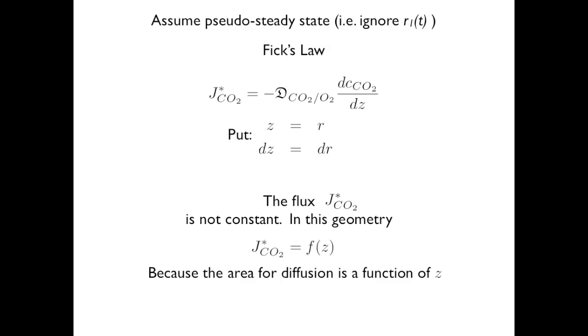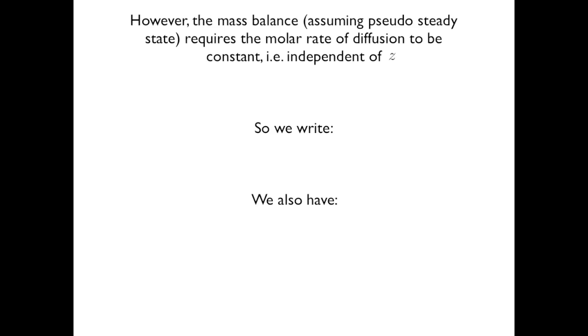In this spherical system, the flux is not constant because as r changes, the area through which CO2 diffuses also changes. However, the mass balance requires a molar rate of diffusion that is constant and independent of r.